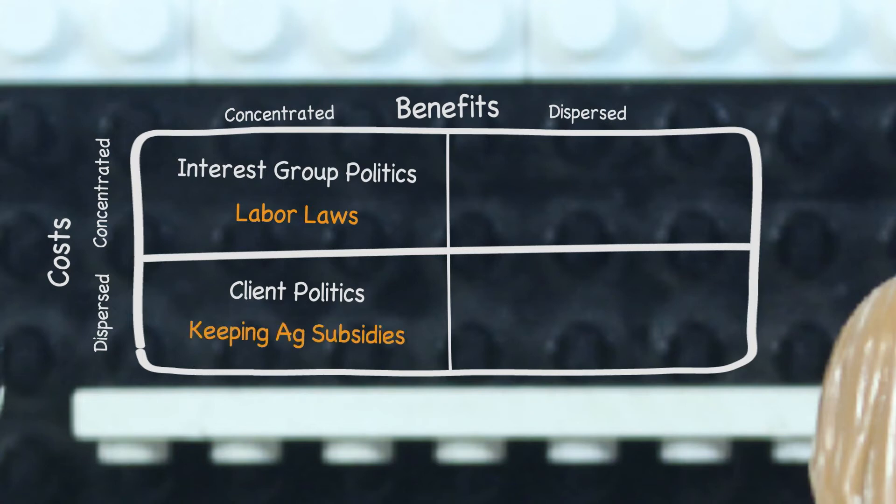We can think of ag subsidies as an example of this dynamic. We all pay a bit more for food because of ag subsidies, but the amount we pay is small enough that it isn't worth mobilizing over. However, the ag industry benefits from those subsidies, so it mobilizes and gets those benefits.